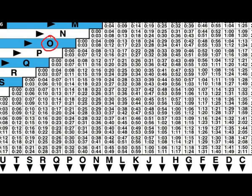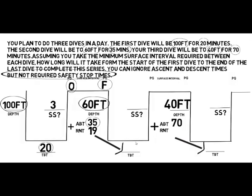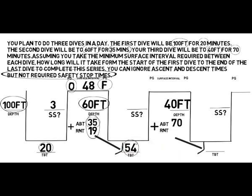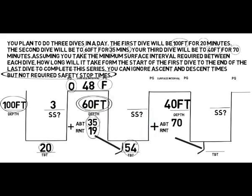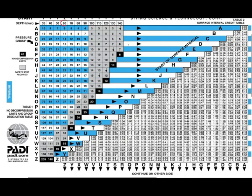How do you get from pressure group O to pressure group F? That is the surface interval credit part of the table. We focus on the minimum surface interval, and with a surface interval of 48 minutes now entered on our diagram, we can continue working. The next blank is total bottom time — thankfully we noted down the residual nitrogen time, so it's a simple addition, giving us a 54-minute total bottom time on the 60-foot dive. From that we can find out whether we need a safety stop and what our ending pressure group would be.